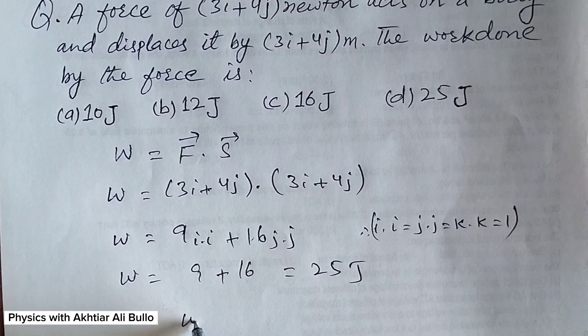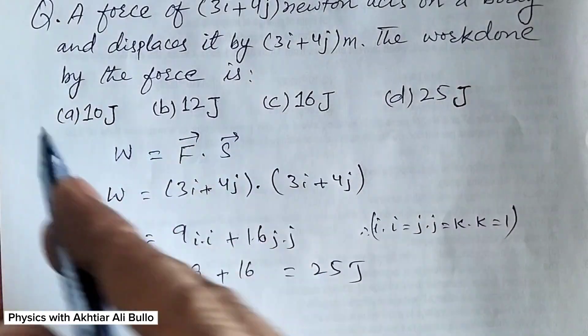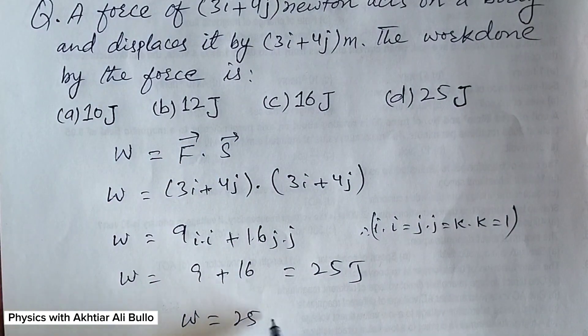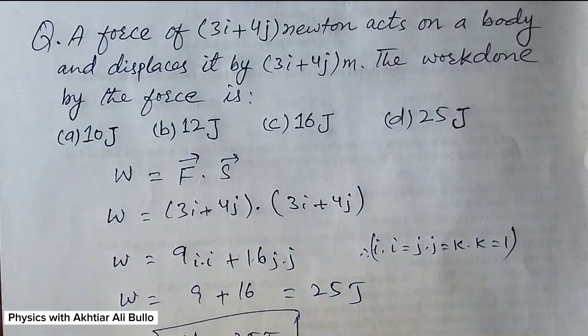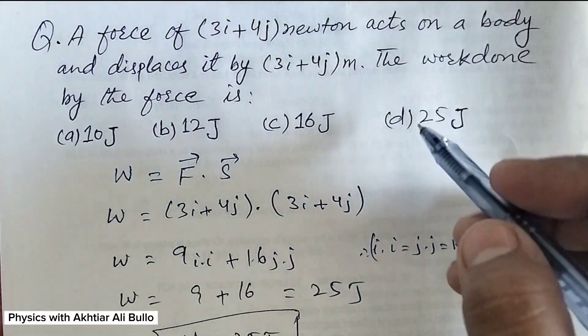This means work done by the force is obtained as 25 joule. So the correct option will be D, 25 joule.